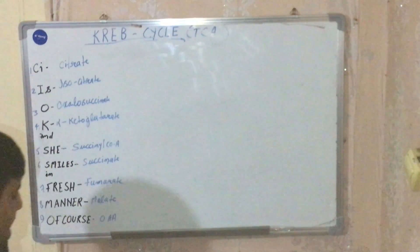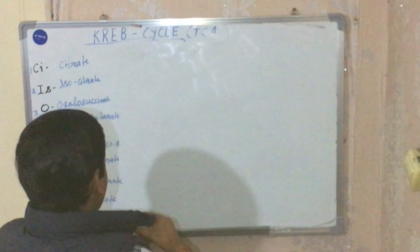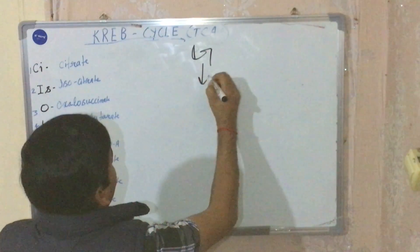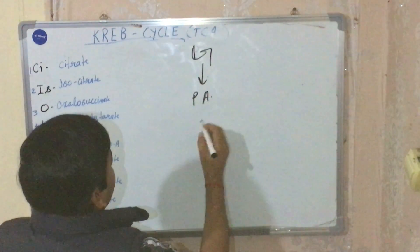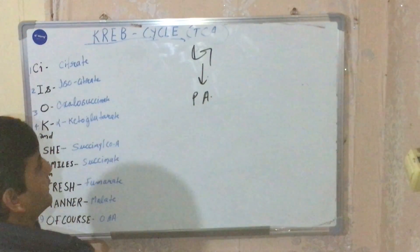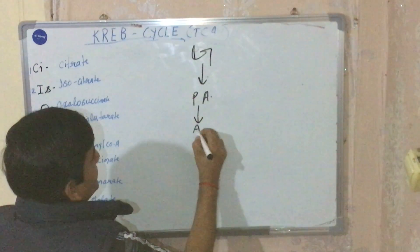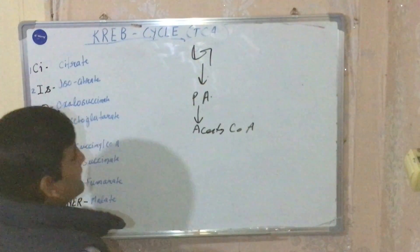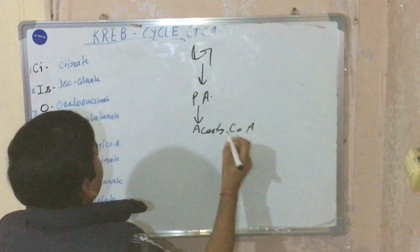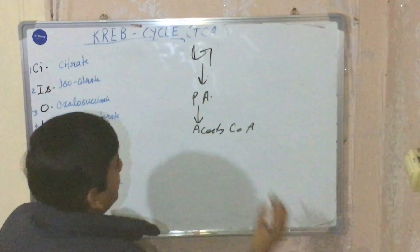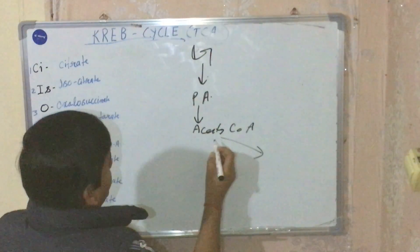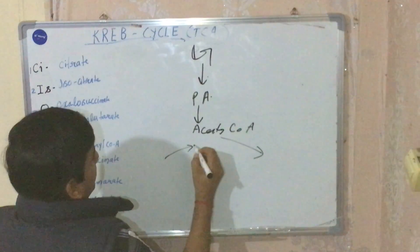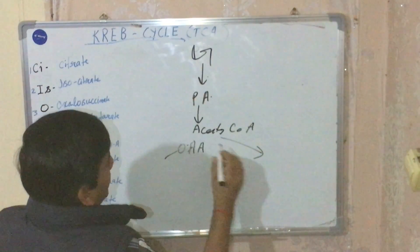From glycolysis we can get pyruvic acid, and this pyruvic acid is further converted into acetyl coenzyme A. This acetyl coenzyme A then goes into the cyclic process called the Krebs cycle, where it is condensed or mixed with oxaloacetic acid.